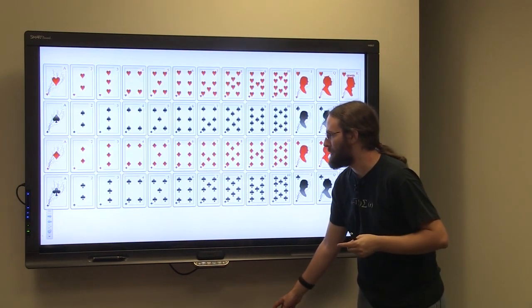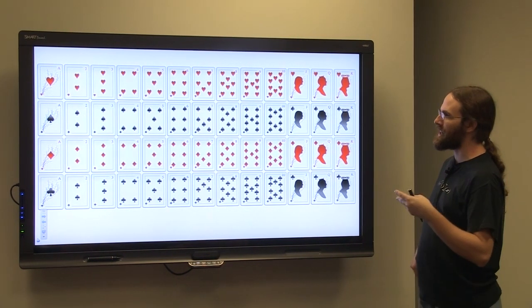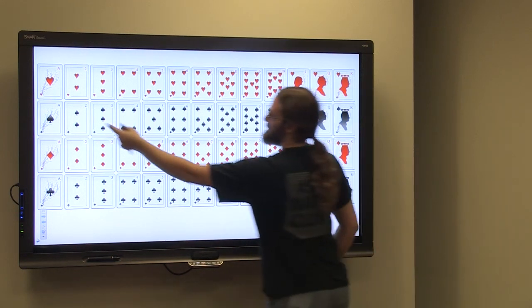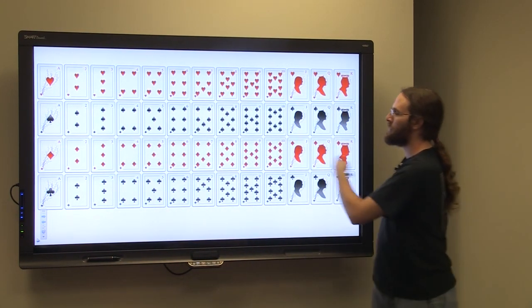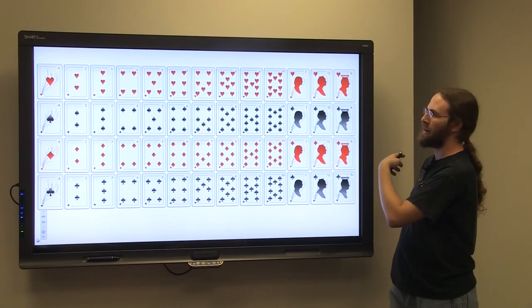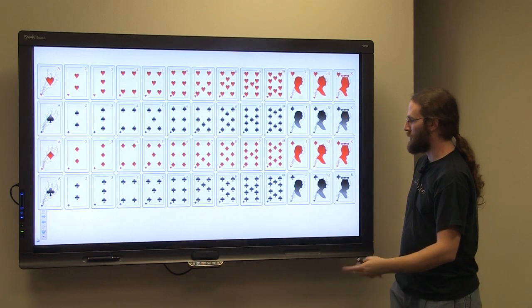Some students look at this problem and want to solve it directly. If you solve it directly, if you think about not drawing a heart, you're drawing a spade, a diamond, or a club. That would be three-fourths of the cards. So if you look at this problem directly, the probability of not drawing a heart would be three out of four.